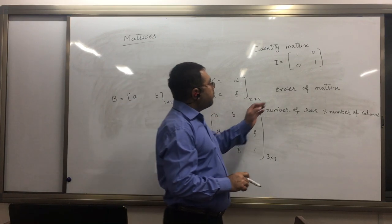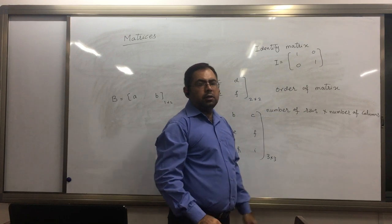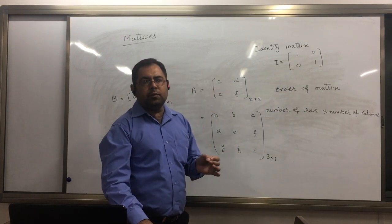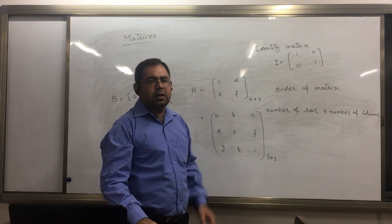These elements must be like that. Their number of rows will be equal to number of columns. And what is the null matrix?